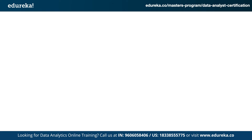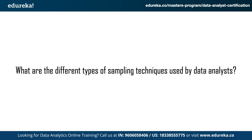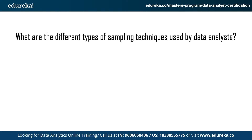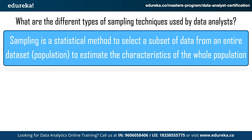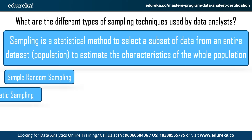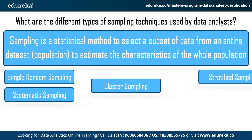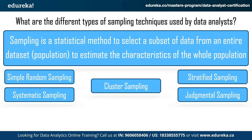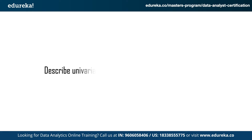The next question is: what are the different types of sampling techniques used by data analysts? Sampling is a statistical method to understand a subset of data from an entire data set to estimate the characteristics of the whole population. In sampling, you take a part of the entire data set, analyze it, and based on the results of that sample you derive conclusions for the entire data set. The different types of sampling techniques are: simple random sampling, systematic sampling, cluster sampling, stratified sampling, and judgmental sampling.